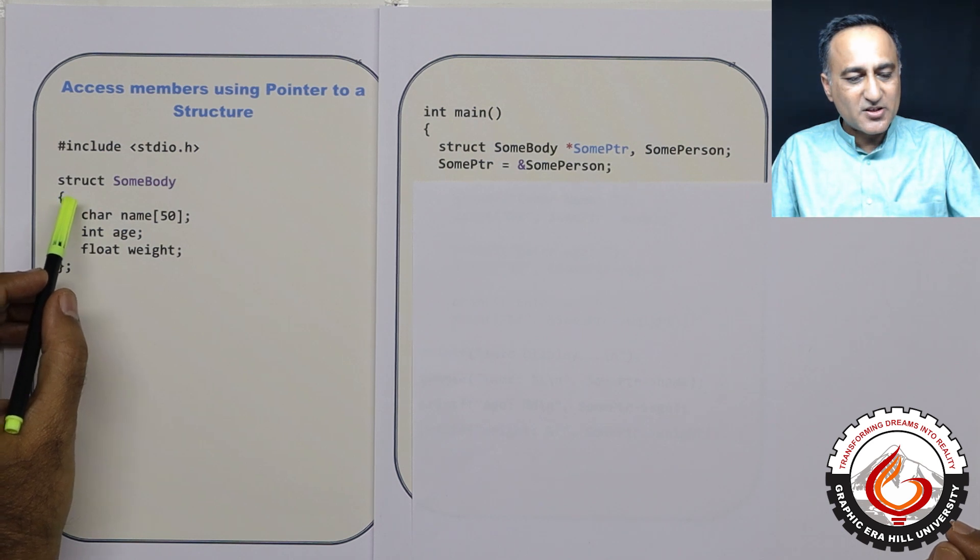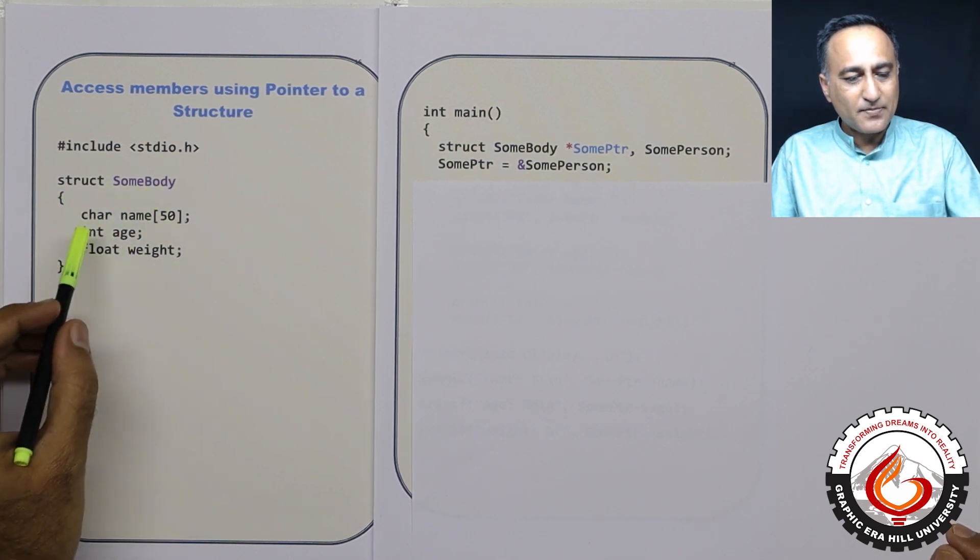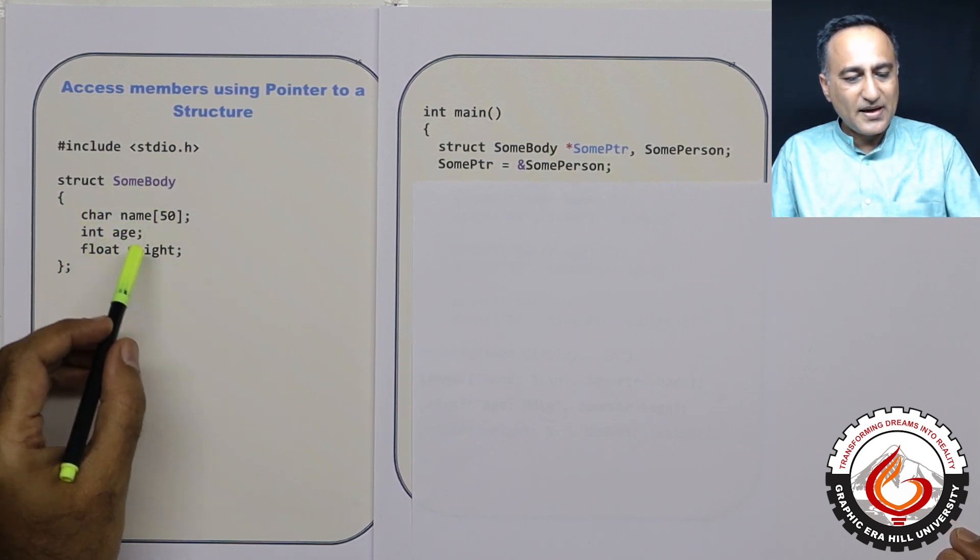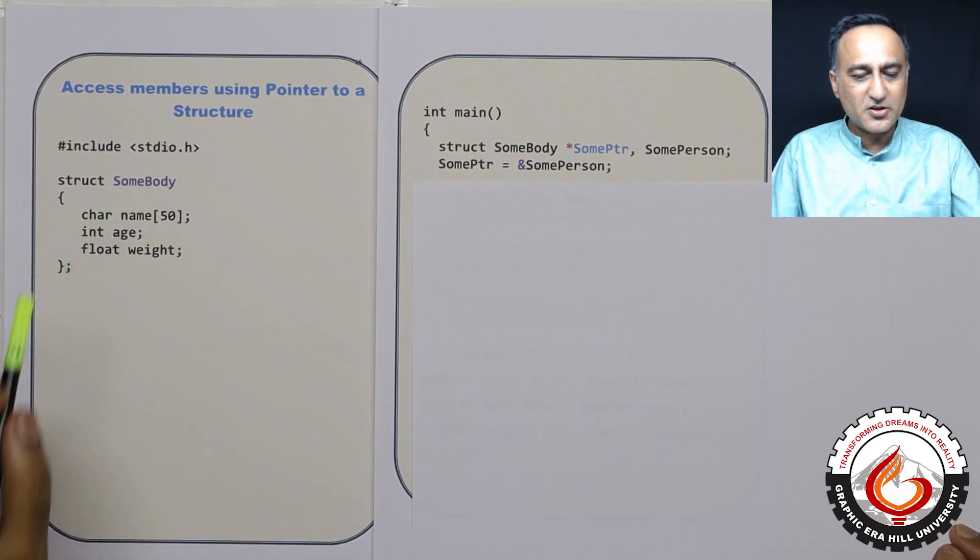So what I have done is I have declared a structure whose name is somebody who has name, age, and weight as the members of this particular structure.